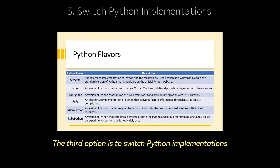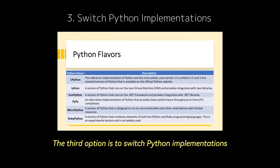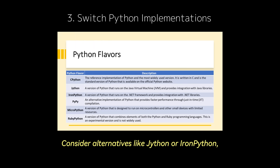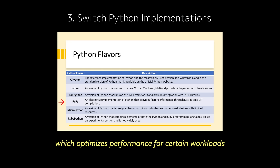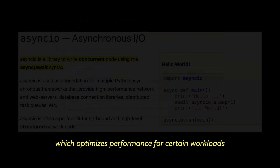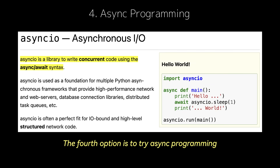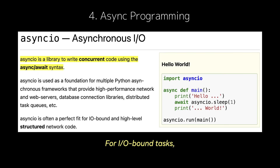The third option is to switch Python implementations. Consider alternatives like Jython or IronPython, which don't have a GIL, or PyPy, which optimizes performance for certain workloads. The fourth option is to try async programming. For IO-bound tasks, Python's AsyncIO lets you manage multiple tasks without relying on threads.